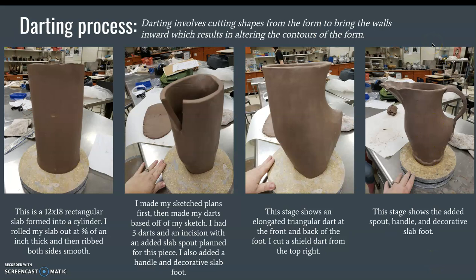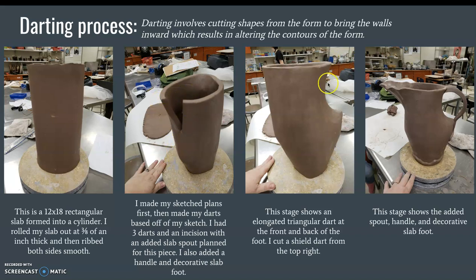This darting process here — this is not my work, this is a different person — they created a jug. You can see they started with a cylinder, then decided where to cut. They had a sketched plan, so they had an idea where to do the darting. The darting happened right here, and then they actually cut to add a spout and a handle. You can see how they started with this form and ended up with that.